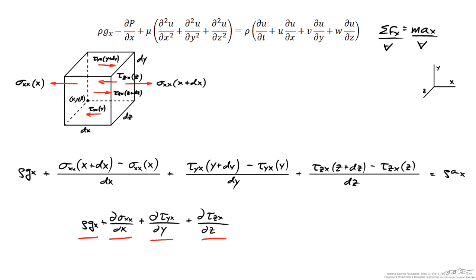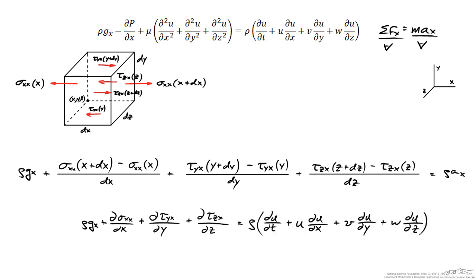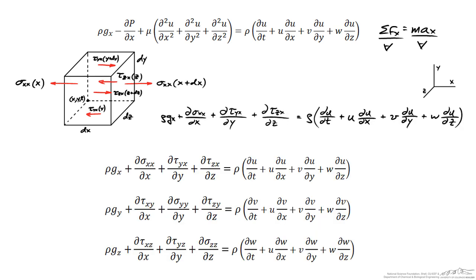The resulting equation represents the sum of forces in the x direction due to gravity, due to the normal forces acting on the left and right sides, the shear stresses on the top and bottom, and the shear stresses on the front and rear faces — all equal to the density times the acceleration in the x direction. If I did the same analysis for y and z, I arrive at the three equations of motion for a fluid.